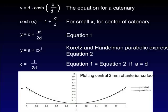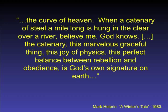What is the equation for a catenary? The equation is very similar to the parabolic expression that Quartz and Handelman proposed in a series of experiments, which shows that the anterior surface of the lens has a steeper radius of curvature and gradually flattens toward the periphery. This is an aspheric lens, which is what we possess as humans, and an aspheric lens gives us greater depth of field.